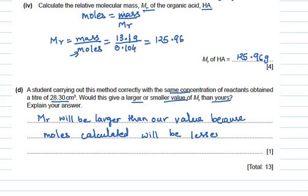In summary, after performing the titration you should tabulate your readings properly with correct units, note all readings to two decimal places, select consistent results, tick the readings you consider, calculate the mean, and then perform the mole-concept calculations correctly with appropriate significant figures. I hope this video is useful whenever you perform titration practicals.